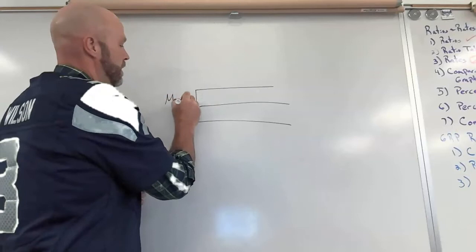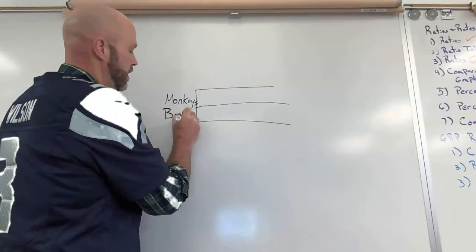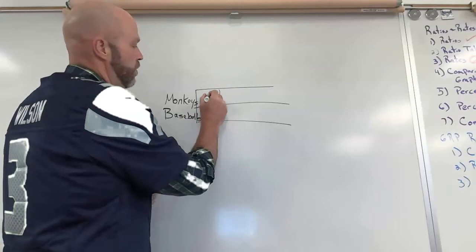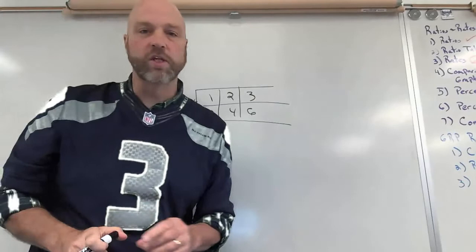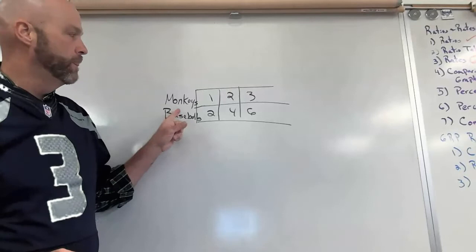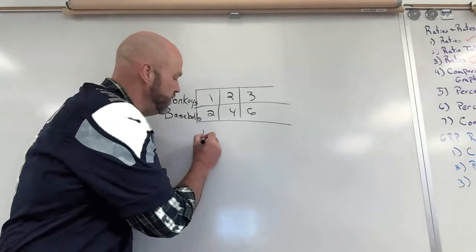So if I have monkeys compared to baseballs and I have one monkey for every two baseballs, you get this pattern two, four, three, six. So this is going to happen all the way along. But if I'm looking for a fraction, what fraction of the objects are monkeys?